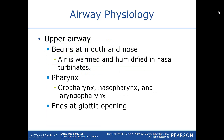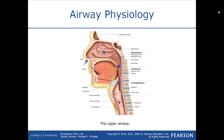The upper airway begins with the mouth and the nose. As you take a breath in, the air is warmed and humidified in the nasal turbinates. The air then enters the pharynx — what we know as the throat — which is made up of the oropharynx, the nasopharynx, and the laryngopharynx. The upper airway ends at the glottic opening, or the opening to the trachea.